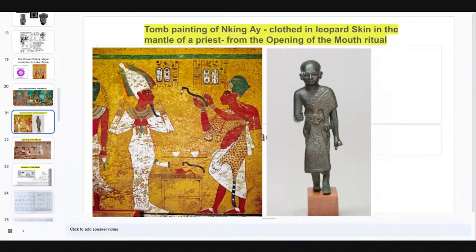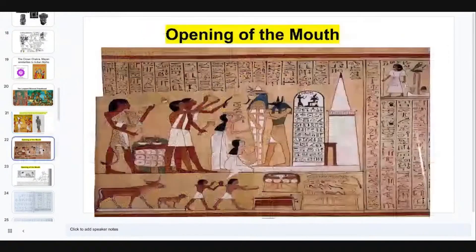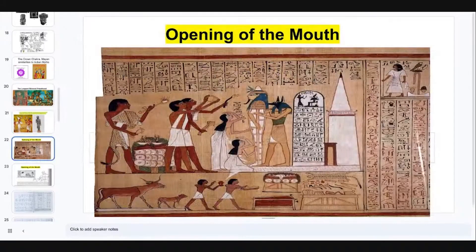This is part of a larger ritual called the Opening of the Mouth, or the Wep Wat ritual. On the right, we have a statue from the Ptolemaic period of a priest wearing a leopard skin. His shaved head is an indication that he is a Shem priest, and also the leopard skin. We'll be going over this Opening of the Mouth ceremony, which can be seen in the Book of the Dead, the Papyrus of Ani, and also right here in the Americas.